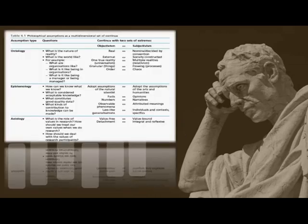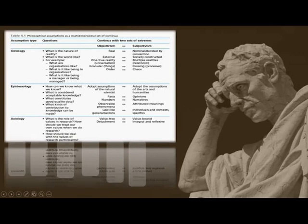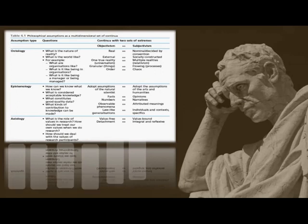This table provides a nutshell about philosophical assumptions as a multi-dimensional set of continua. The assumption types include ontology, epistemology, and axiology, and on the right side you can see a continuum between objectivism and subjectivism, showing the comparison. If you are interested in the details, you can download the presentation slides already uploaded in the description below — it will be useful if you want to know more.